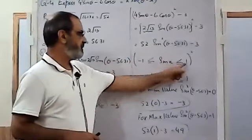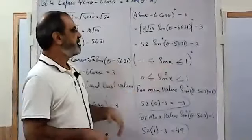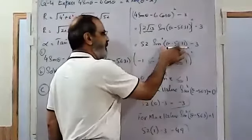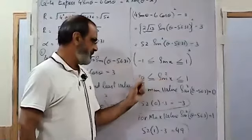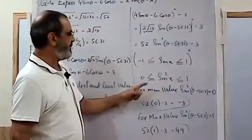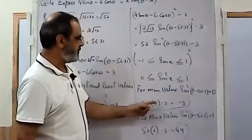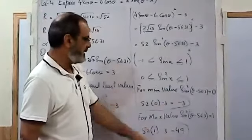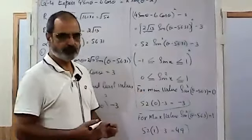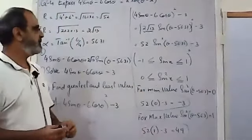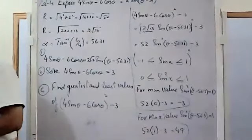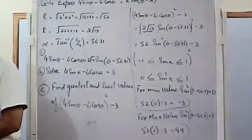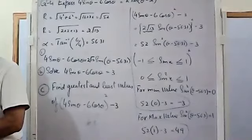So remember: I used the maximum and minimum values of the sine function, which lies between 1 and -1. But here we have sine squared, so I took the square of those values, giving a range of 0 to 1 for sine squared. That gives minimum -3 and maximum 49. That's it for today. In the next lesson we will discuss questions from the past papers, or if there is any difficulty in this exercise we can discuss that as well. Thank you very much.